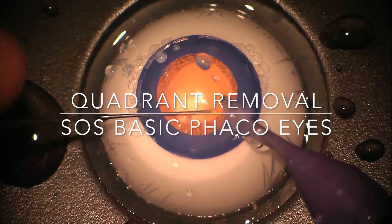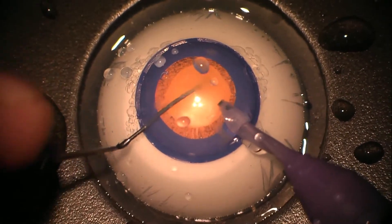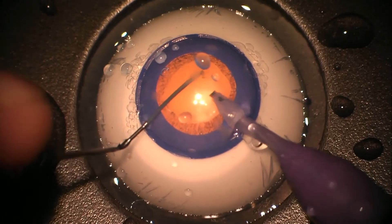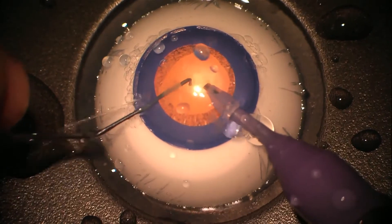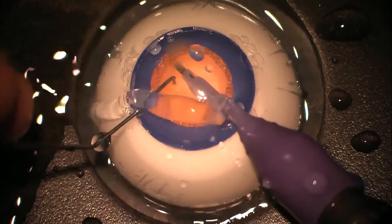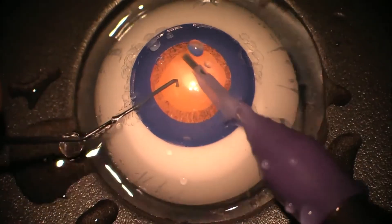In this video we're illustrating how we use an SOS basic cataract eye to practice segment removal and once again consolidating the skills the trainees would have learnt with the IC modules.